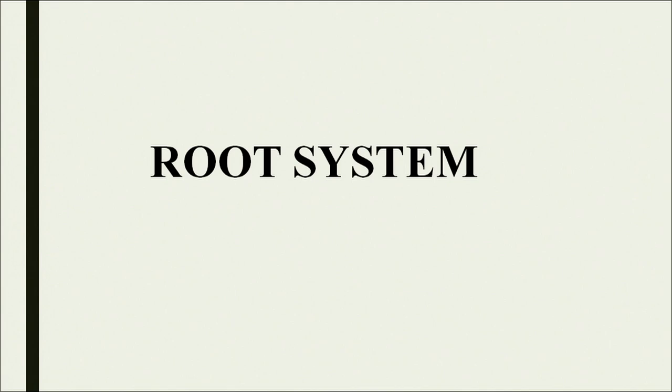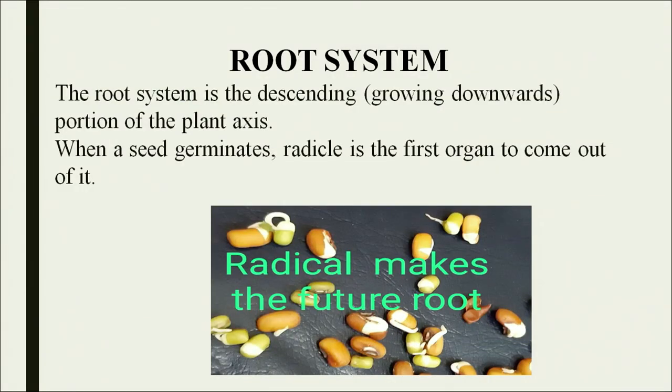Hello learners, we are starting with our topic root systems. You have already studied that root is the underground system of any plant and it develops from the radicle. The radicle is the part of the seed that makes the root, and when the seed germinates, the radicle is the first organ to come out of it and makes the root.